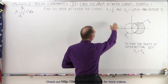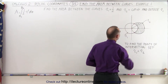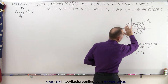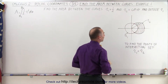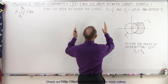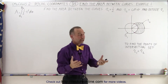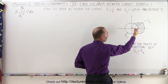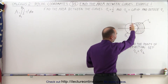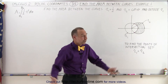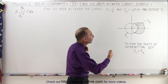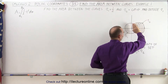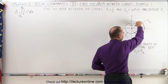The polar functions are r1 equals 1/2 and r2 equals the cosine of theta. They're both circles. The cosine of theta function is a little bit offset from the origin. We're trying to find the area between the two — and since they also tell us to find it outside of r1, it can only be this area right here.